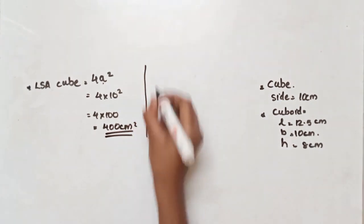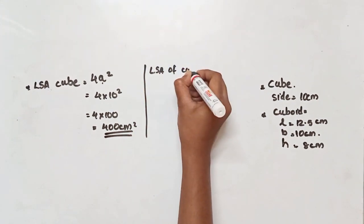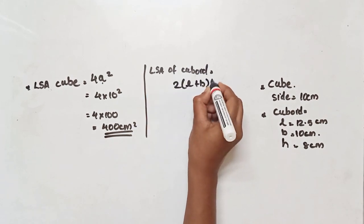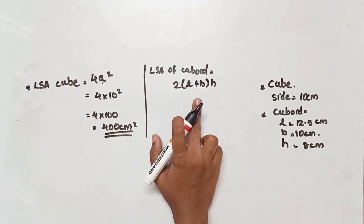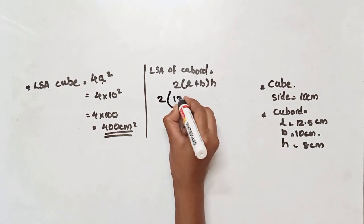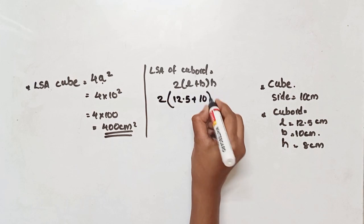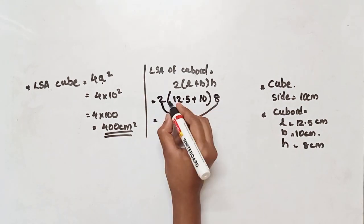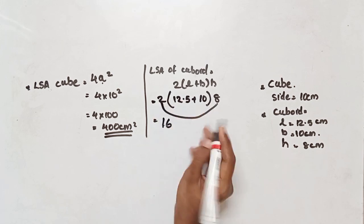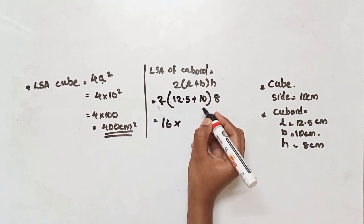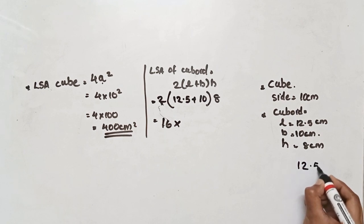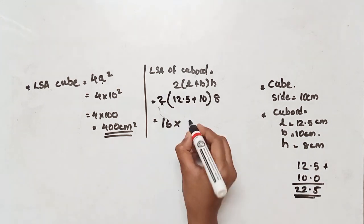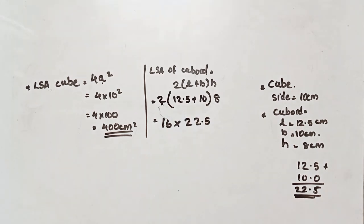Lateral surface area of a cuboid — the formula is 2 into (l + b) into h. We substitute the values: 2 into (12.5 + 10) into 8. That gives us 2 into 8, which is 16. And 12.5 plus 10 is 22.5. So we have 16 into 22.5.